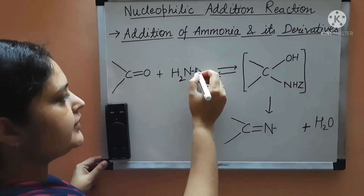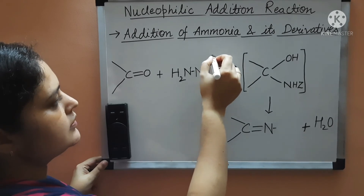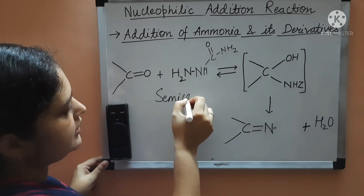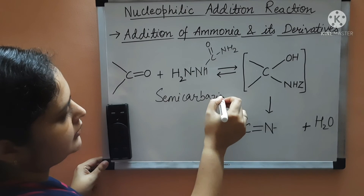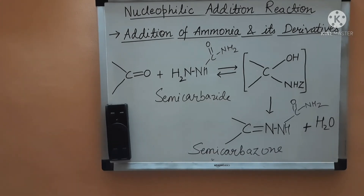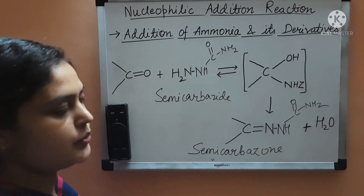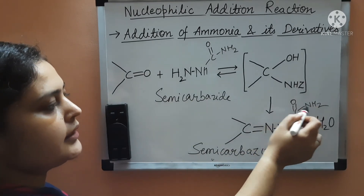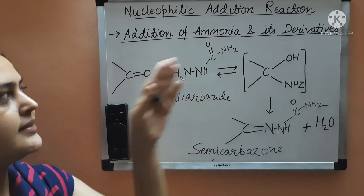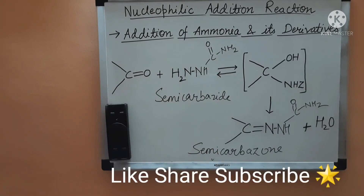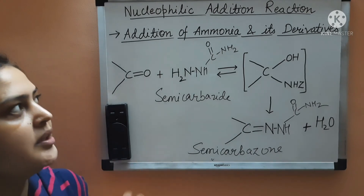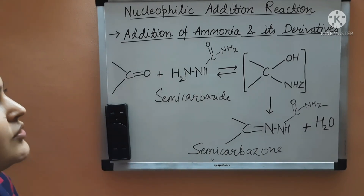The last derivative is semicarbazide. For semicarbazide, the Z group will be NH-CO-NH2 — this is semicarbazide. The product will be called a semicarbazone, where the Z group is also NH-CO-NH2. This is how we determine our products when we use ammonia and its derivatives with aldehydes and ketones. Next, we will study reduction under chemical reactions of aldehydes and ketones. I hope you have understood this topic. Thank you.